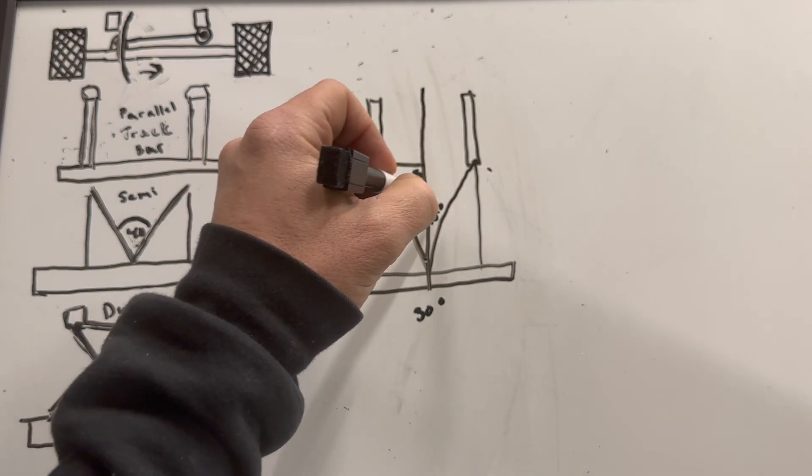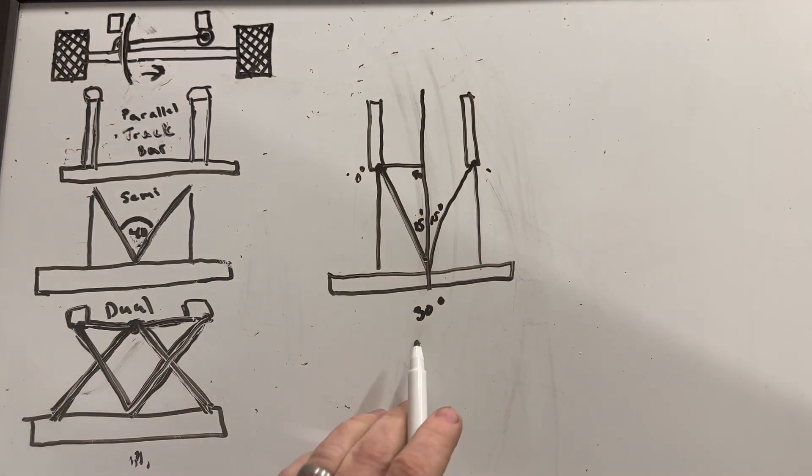Now that's a problem because we have 30 degrees of total triangulation. Zero, zero, 15, 15, 30. That's what we have in total. Because of that, that's not enough.